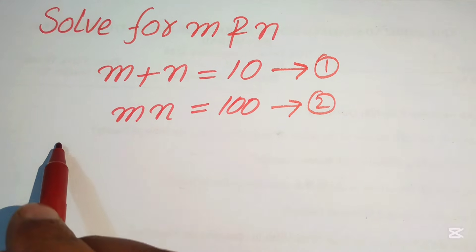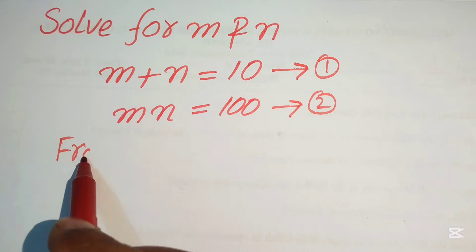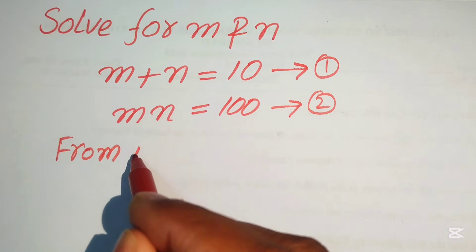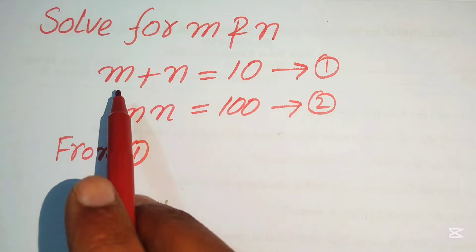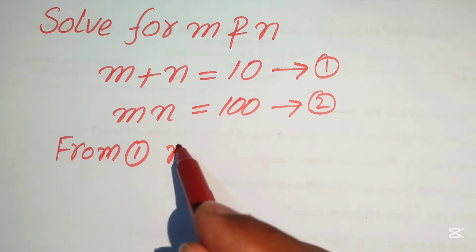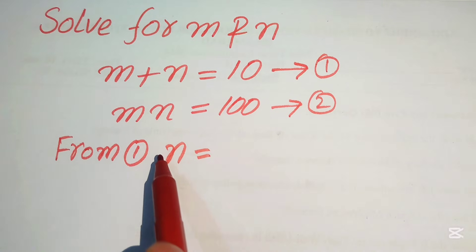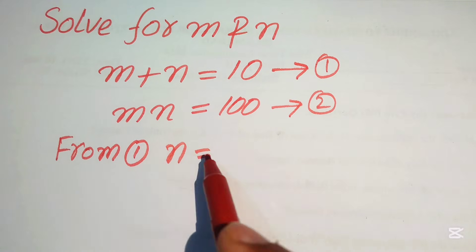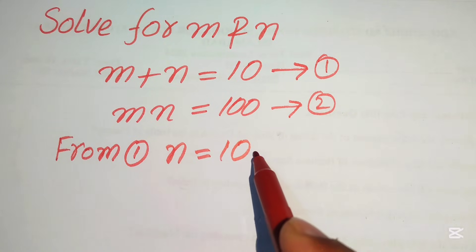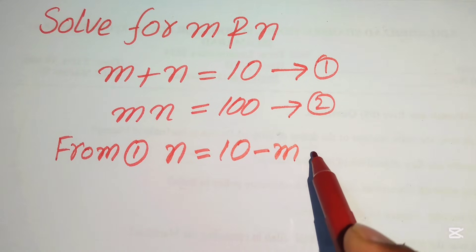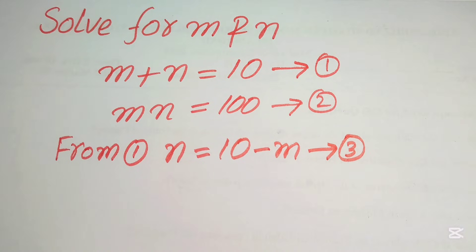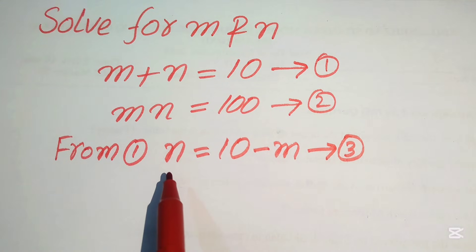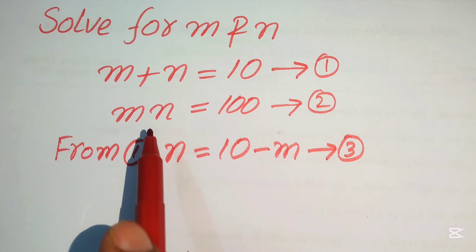We focus on equation number one. From equation number one, we move m to the right-hand side, so we get n equals 10 minus m. We call this equation number three. We need to substitute this value of n in equation number two.